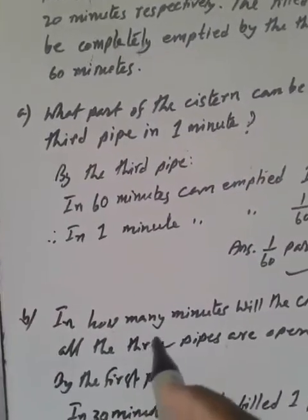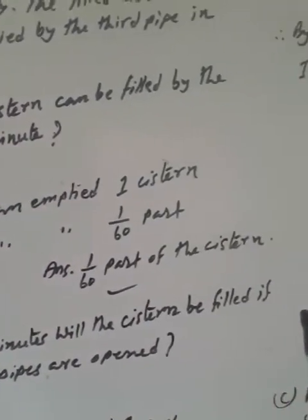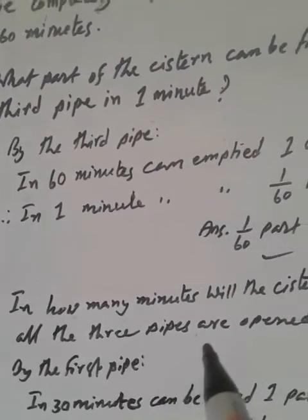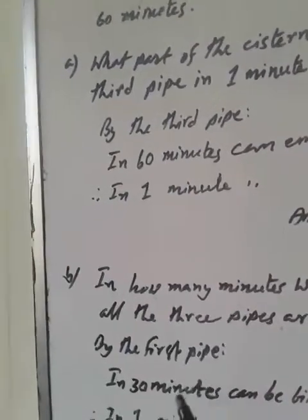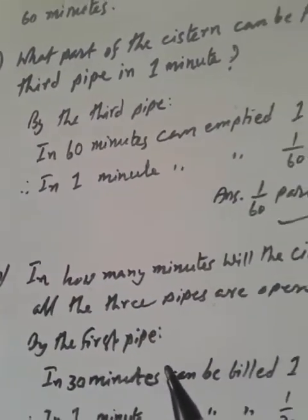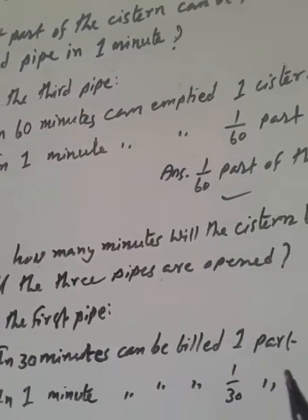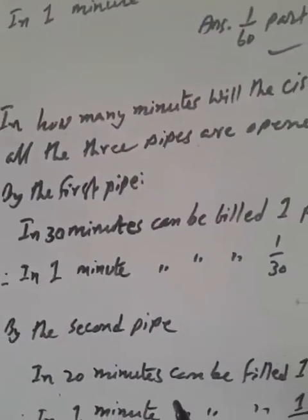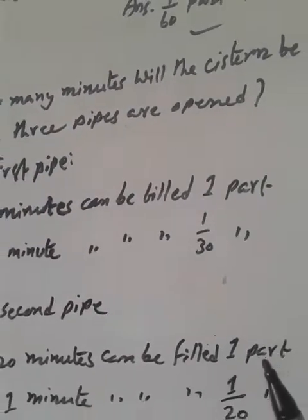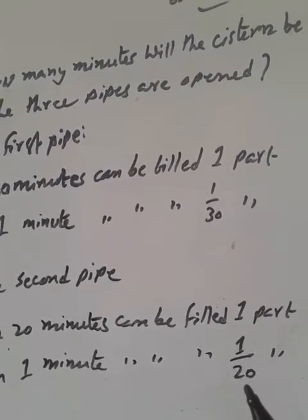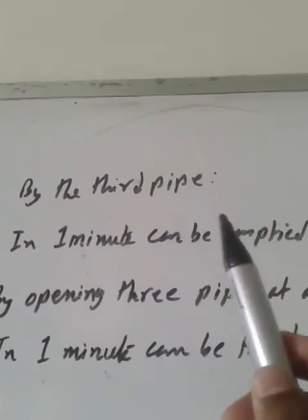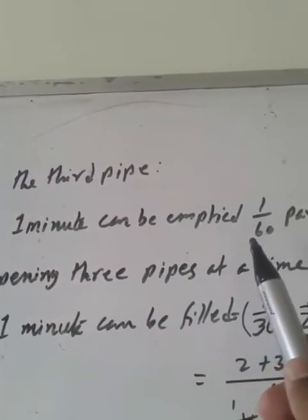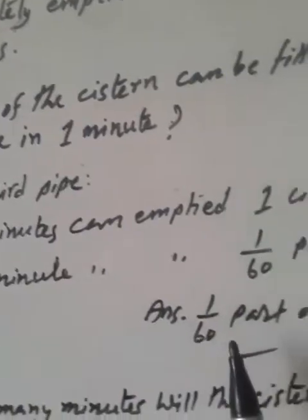The question is: in how many minutes will the cistern be filled if all three pipes are opened? By the first pipe, in 30 minutes one part can be filled, so in one minute it can fill 1/30 part. By the second pipe, in 20 minutes it can fill 1/20 part. By the third pipe, in one minute it can empty 1/60 part, as we got in part A.